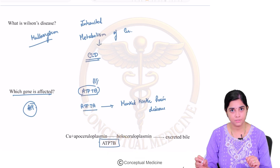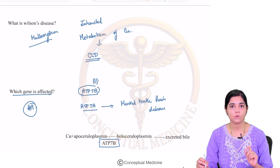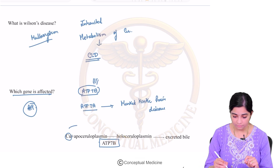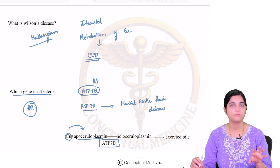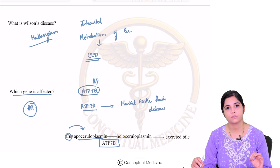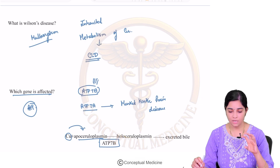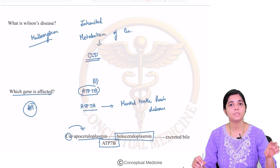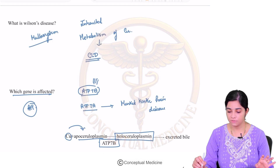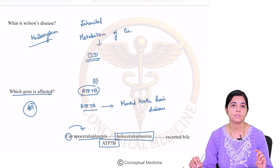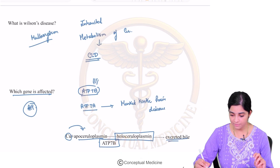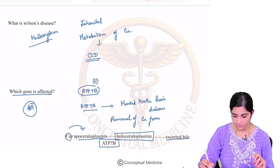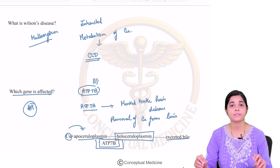What is the function of this ATP-7B gene? To understand this, let us understand the copper metabolism a bit. The copper which is found in an unbound form binds with a protein called apoceruloplasmin. This copper with apoceruloplasmin is called holoceruloplasmin, and this happens in the liver. Copper is transported from the liver to the intestine for its functions, brought about by copper binding to apoceruloplasmin to form holoceruloplasmin, which is excreted in the bile. This is how there is removal of copper from the liver, and it is brought about by the ATP-7B gene.